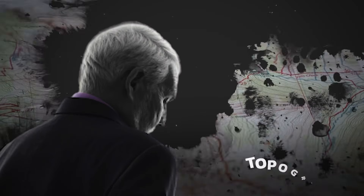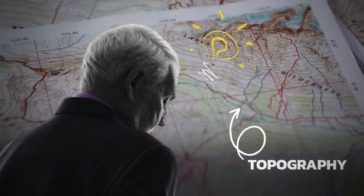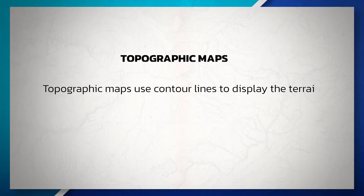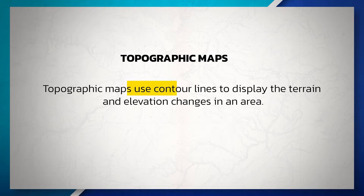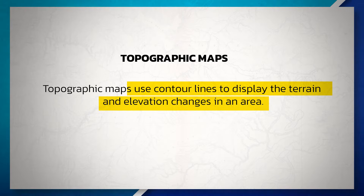Being able to read a topographic map is an important skill to have. Topographic maps use contour lines to display the terrain and elevation changes in an area.